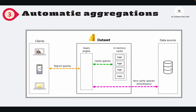The third feature is Automatic Aggregation. Consider it a way to optimize the performance of your reports and dashboards. When you publish your dataset to Power BI service, there is an option under dataset settings to enable automatic aggregation. This will perform automatic aggregations and boost the performance of your dataset. You will definitely feel the difference in report rendering performance on Power BI service.